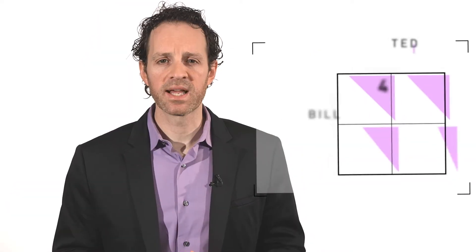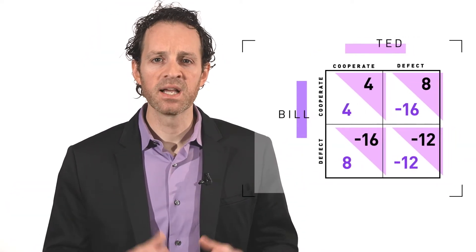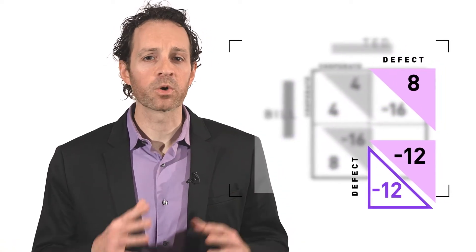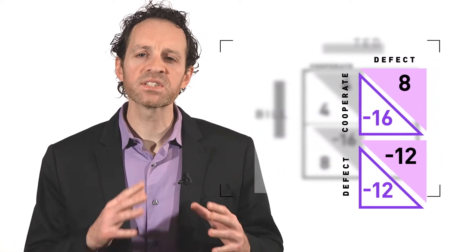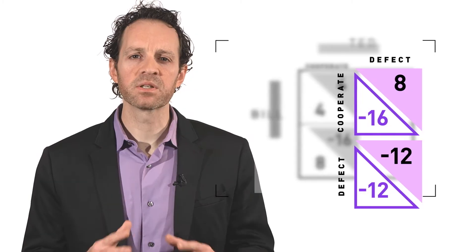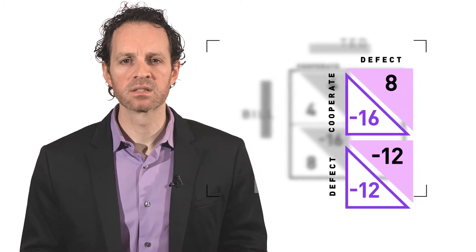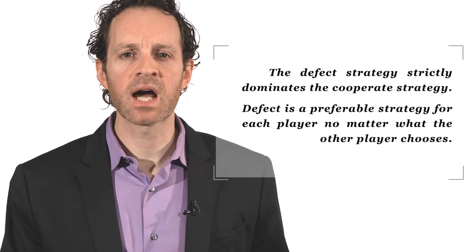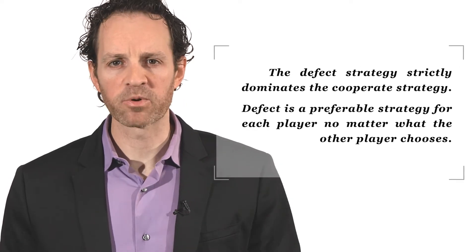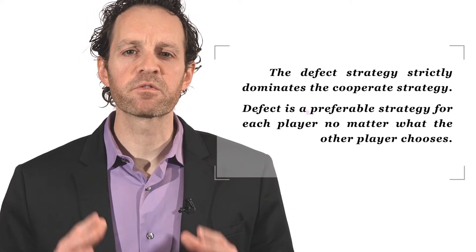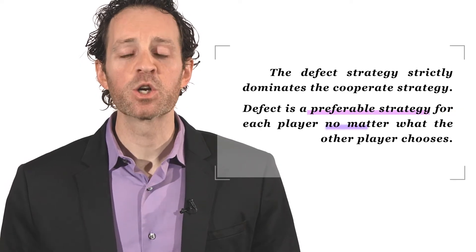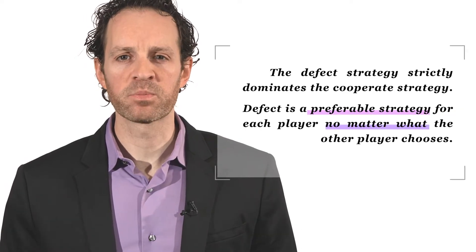On the other hand, if Ted chooses to defect, then Bill's payoffs would be either negative 12 or negative 16. Once again, Bill sees he's better off defecting. For both players, we would say the defect strategy strictly dominates the cooperate strategy, meaning that defect is the preferable strategy for each player, no matter what the other player chooses.